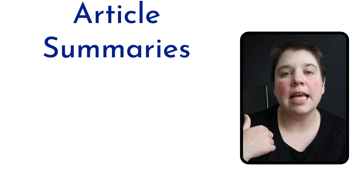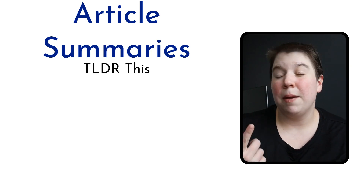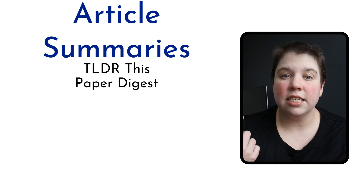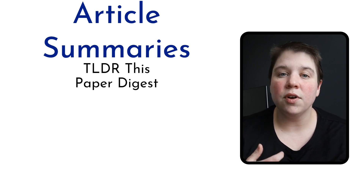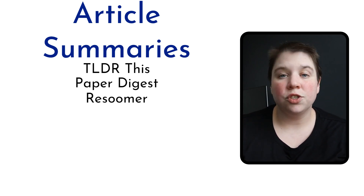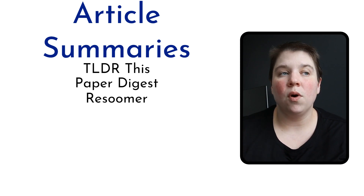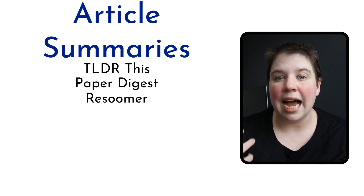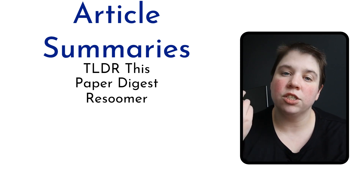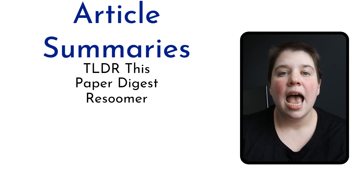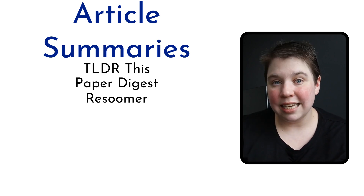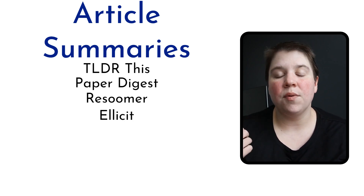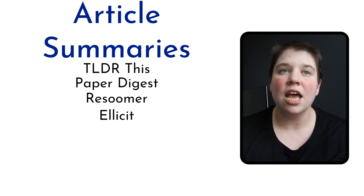Things like TLDR This, Paper Digest, and Article Tools are really good for quick summaries. Resoomer is really good if you want the exact words boiled down to the main points. You can even use specific ones like Elicit, which can actually give you a summary and a question-detailed summary.